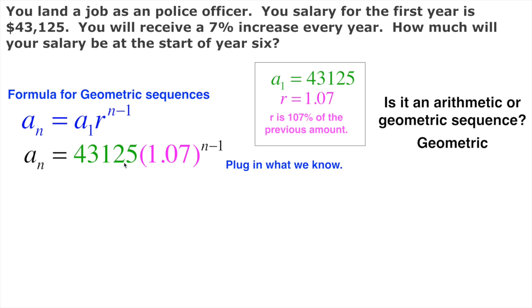Let's plug that information in. This is my first term, 43,125, and this is my ratio, 1.07. Now, this asks us to find how much our salary would be at the start of year six. So for the sixth year we plug in 6 for n. I take this n here and plug in 6 for this n, and also plug in 6 for this n down here.